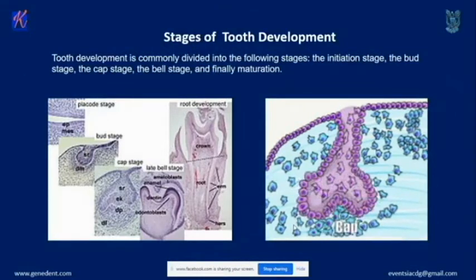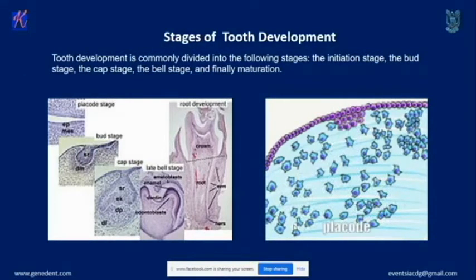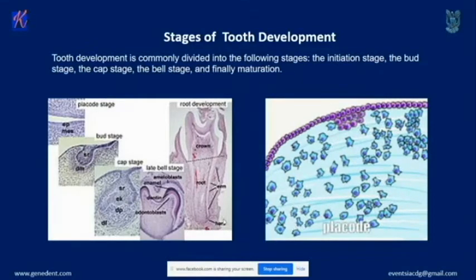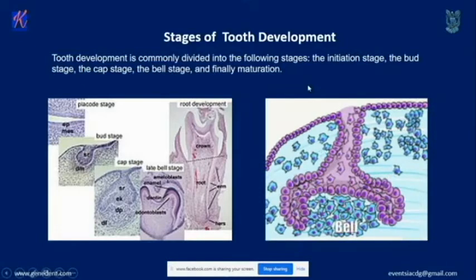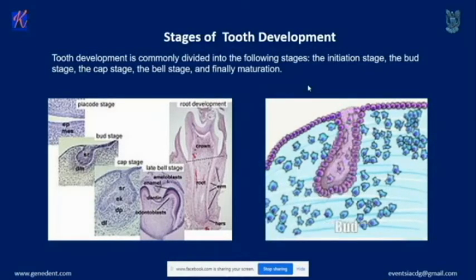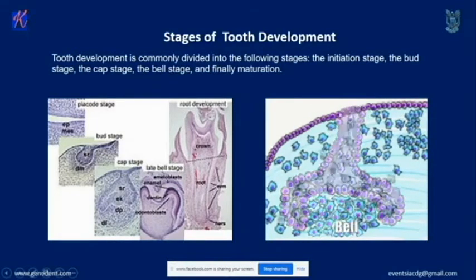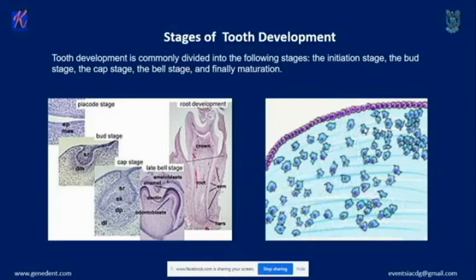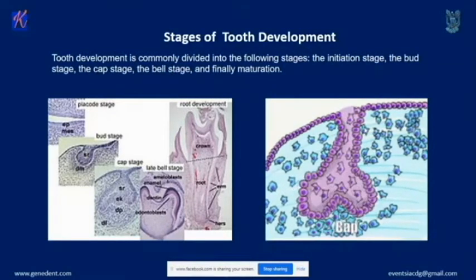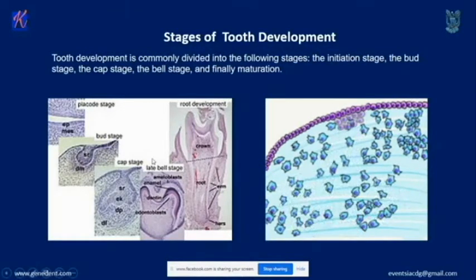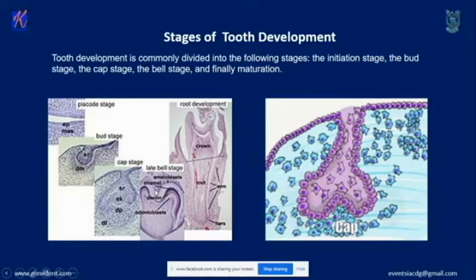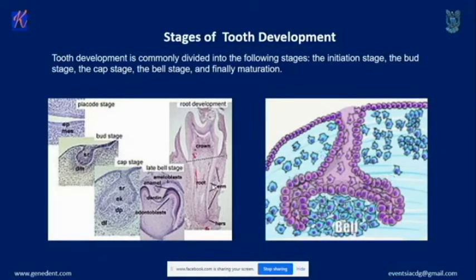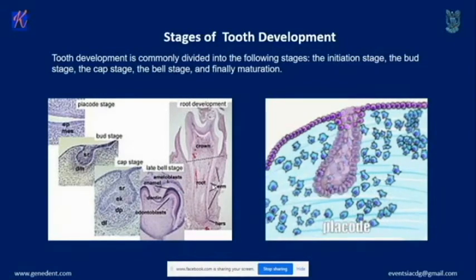The stages of tooth development are a very intricate process. It starts with the thickening of the oral epithelium — something called a placode. From there it dives down, and we have the initiation stage, the bud stage, the cap stage, and the bell stage. These stages are named according to the features seen under the microscope, and the photos on the left-hand side show exactly what we see at each stage.